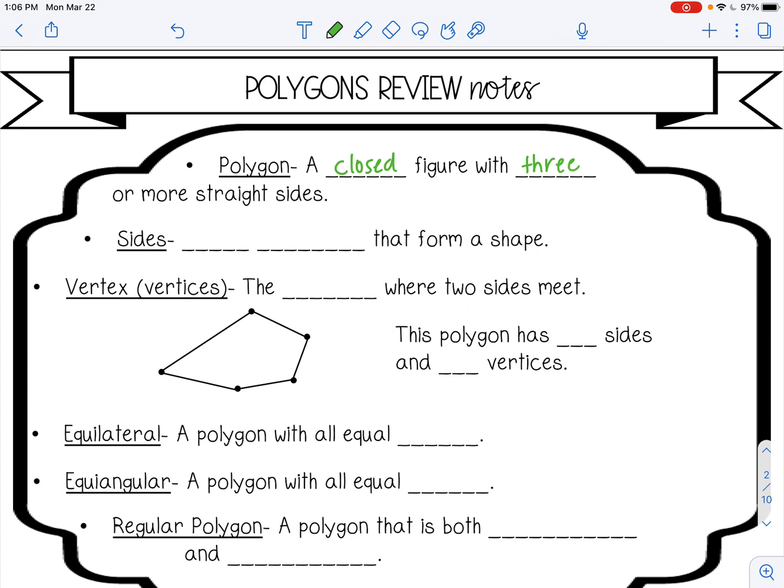Sides are the line segments that form the shape. A vertex, or if you're talking about more than one, vertices, are the points where two sides meet.